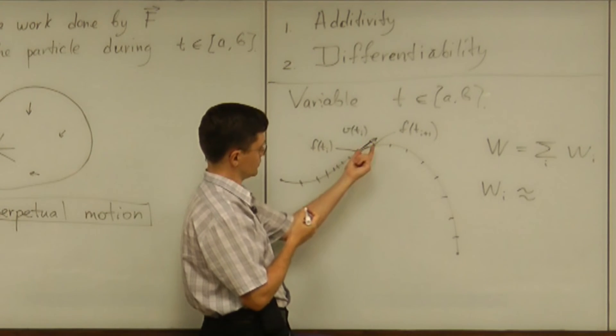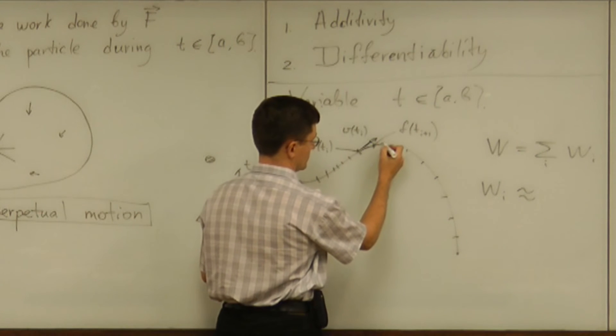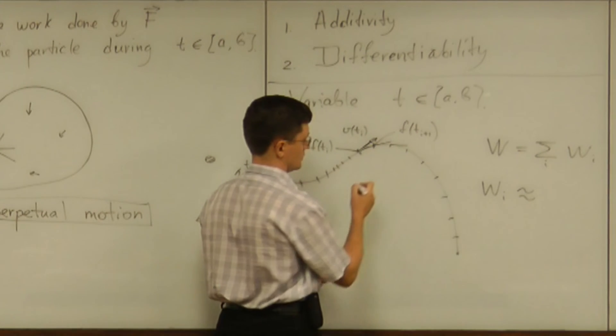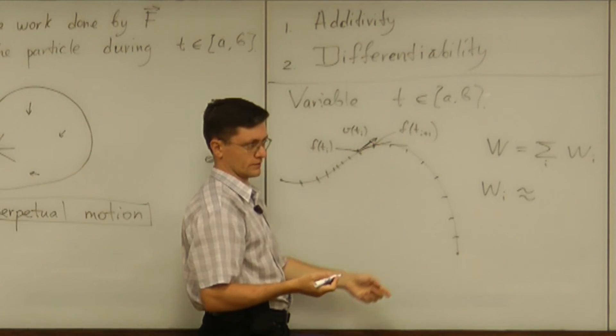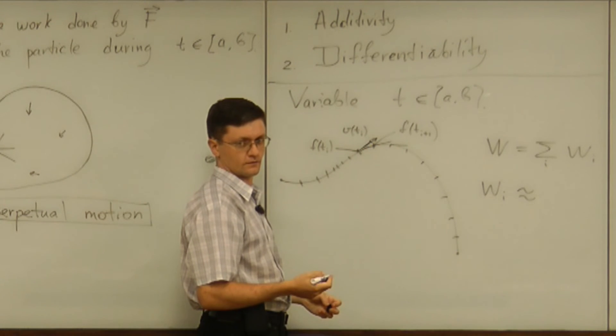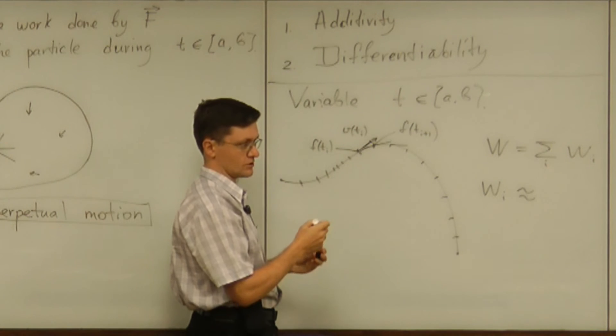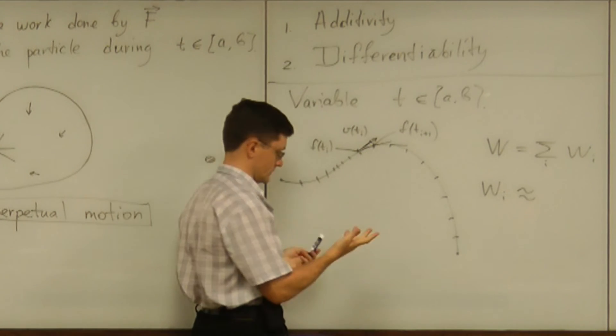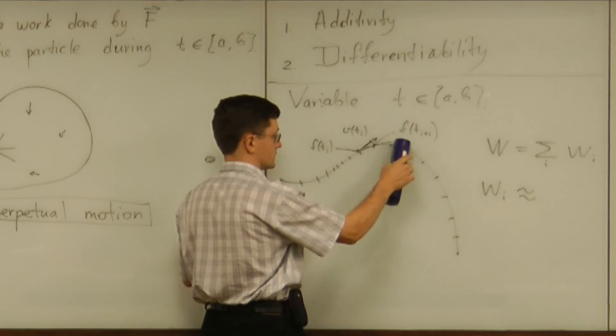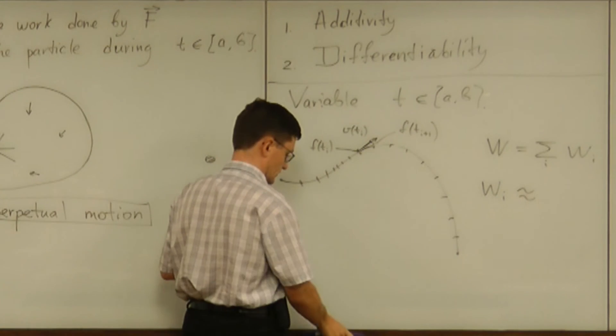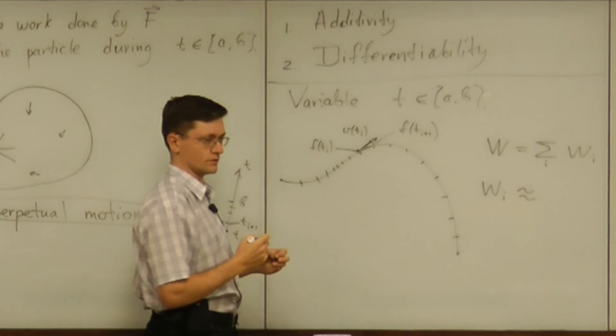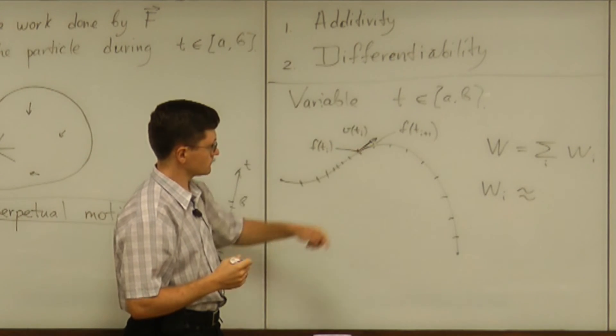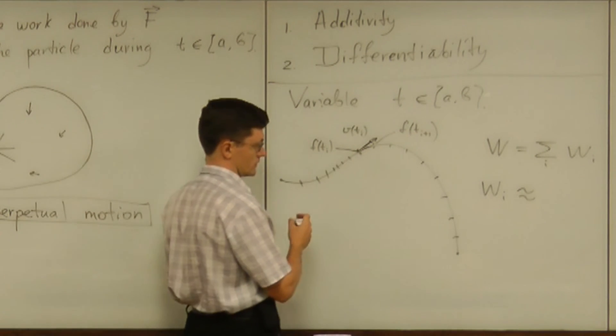And of course if you put those pieces together, those pieces don't even make those approximations. Don't even make a path altogether. So geometrically it doesn't make much sense. But the physicist naturally thinks about replacing that motion with constant velocity motion.